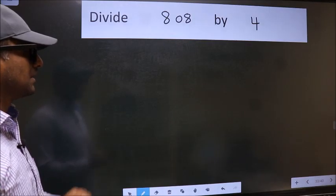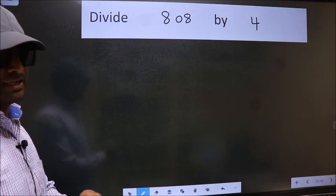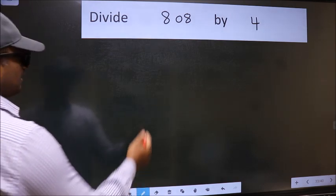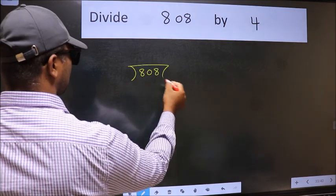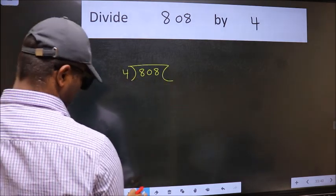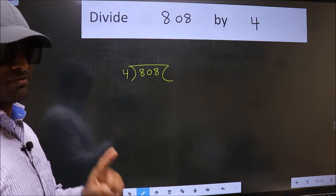Divide 808 by 4. To do this division, we should frame it in this way. 808 and 4 here. This is your step 1.